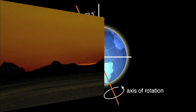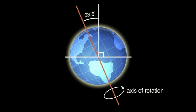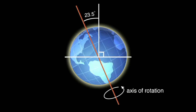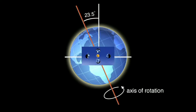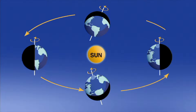The Earth is tilted about 23.5 degrees, which causes the seasons and the change in the length of days on Earth. As the Earth moves in its orbit, the tilt of the North Pole changes in relation to the Sun.